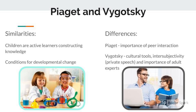Piaget and Vygotsky had some similarities and some differences in their constructionist viewpoints. Both believed that children are active participants in their learning and that children construct knowledge based on what happens in their environment. They both also believed that social institutions and interaction with the world set the conditions for developmental change. In terms of differences, Piaget thought that peer interaction was far more important than adult interaction, while Vygotsky thought that the adult expert who provides guidance, language, and instruction to children was more important. Vygotsky also did not believe that children developed in concrete stages as Piaget did, and he believed cultural influence played a significant part in the developmental path of children.